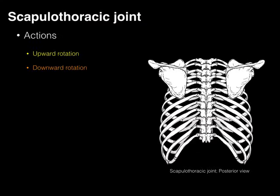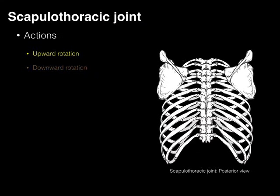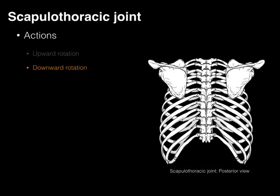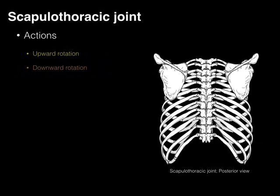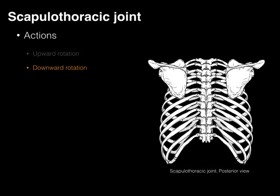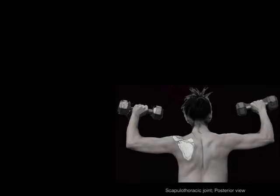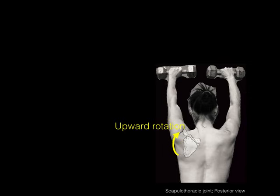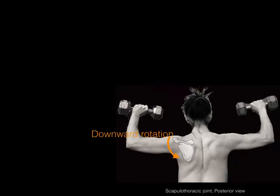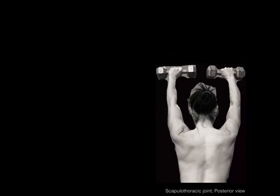What about upward and downward rotation? Upward rotation means the scapula rotates up, or the glenoid cavity rotates up. Downward rotation means the glenoid cavity rotates down. This is especially relevant when raising your hands above your head — that's upward rotation. When they come back down, that's downward rotation.